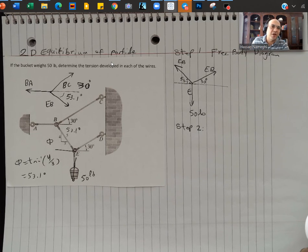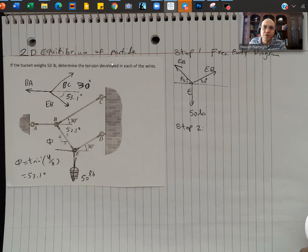Hello again. This time I have a problem with 2D equilibrium of a particle, a little bit more complex problem where I have two points of equilibrium. Now one point is point E, the other point is point B.